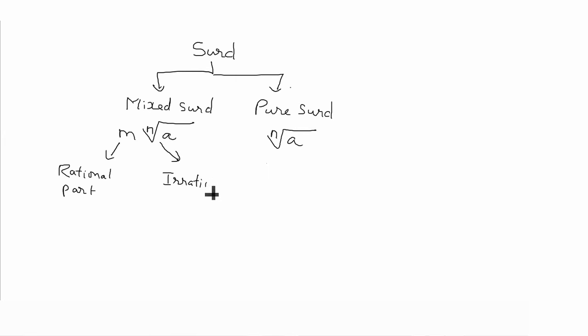We have also seen what are the different types of surd. Surd can be classified into two types: Mixed surd and pure surd. General form of mixed surd can be given as m into nth root of a. Whereas, pure surd can be nth root of a itself. m denotes the rational part and nth root of a denotes irrational part. We have also studied in previous video that we can convert mixed surd into pure surd as well as pure into mixed.